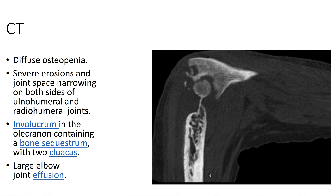On CT of the right elbow, we can appreciate diffuse osteopenia, severe erosions, and joint space narrowing. Again, we see a bone sequestrum with the surrounding involucrum, with two cloacas — one appreciated here.